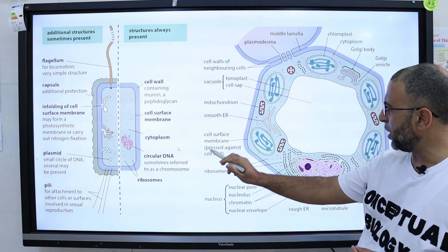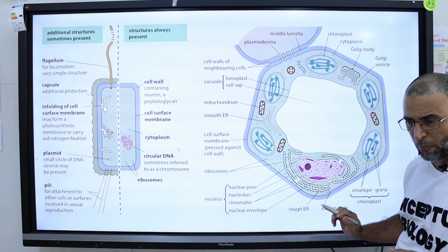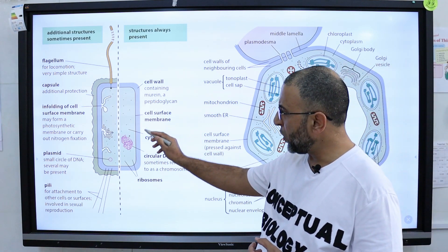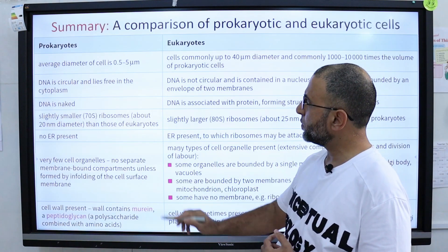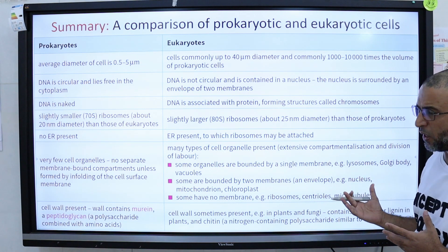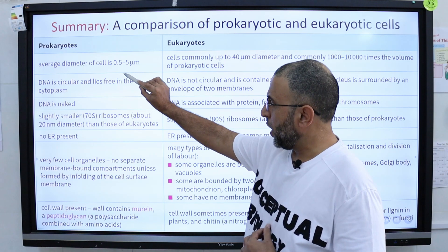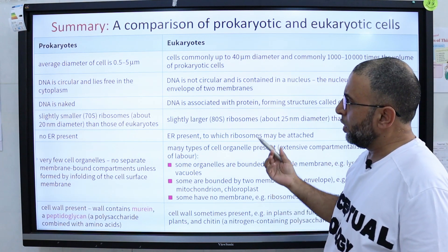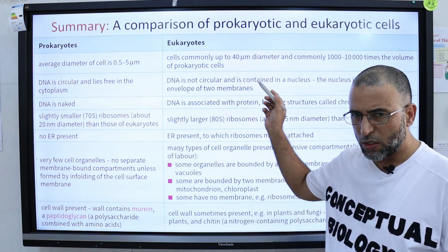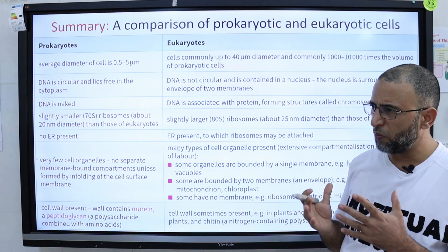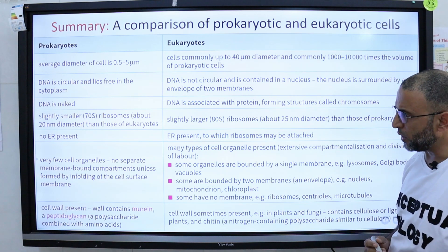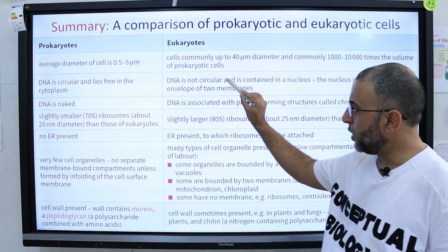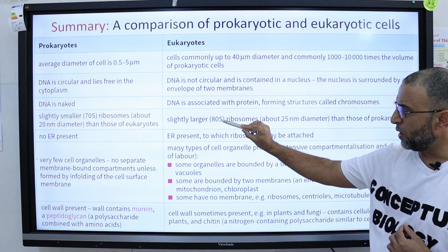Ribosomes are present in both prokaryotic and eukaryotic cells. In eukaryotic cells, ribosomes have a size of 80S, while in prokaryotic cells ribosomes have a size of 70S. As a summary: the average diameter of a prokaryotic cell is 0.5 to 5 micrometers, and in eukaryotic cells it is up to 40 micrometers. DNA is naked in prokaryotic cells, but in eukaryotic cells DNA is associated with histone protein to form chromosomes present inside the nucleus.